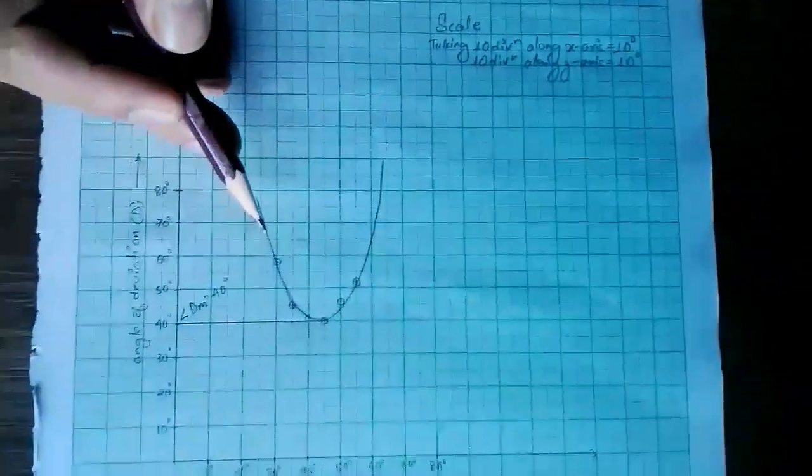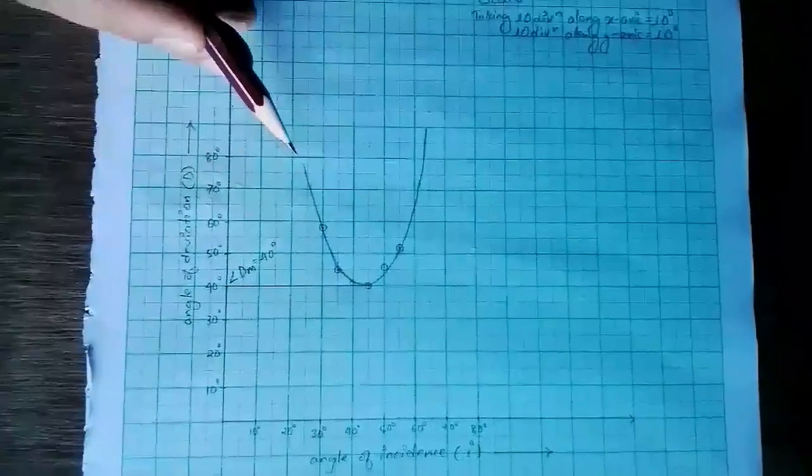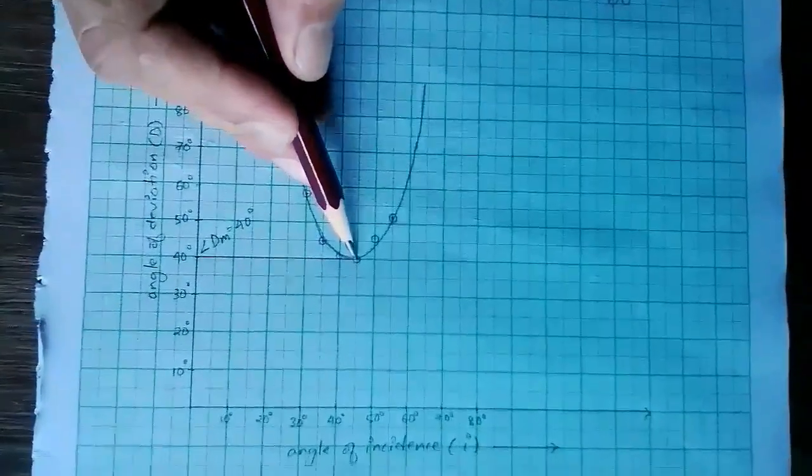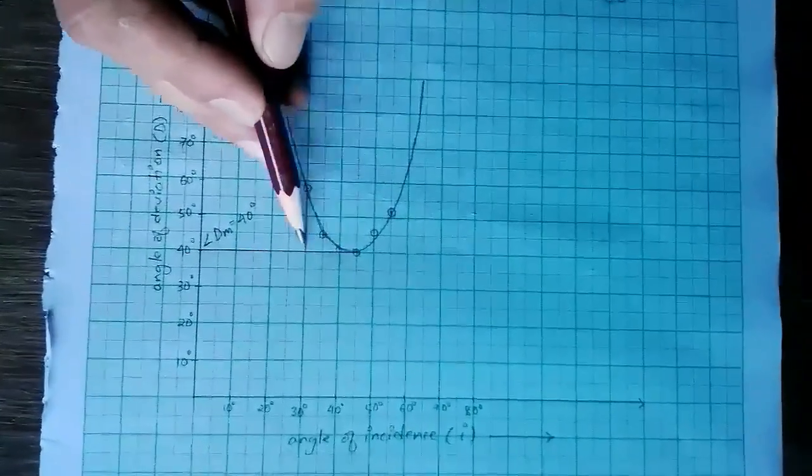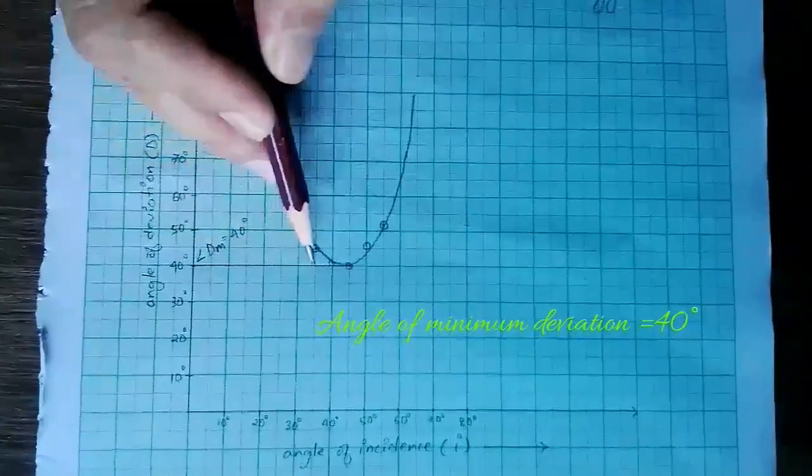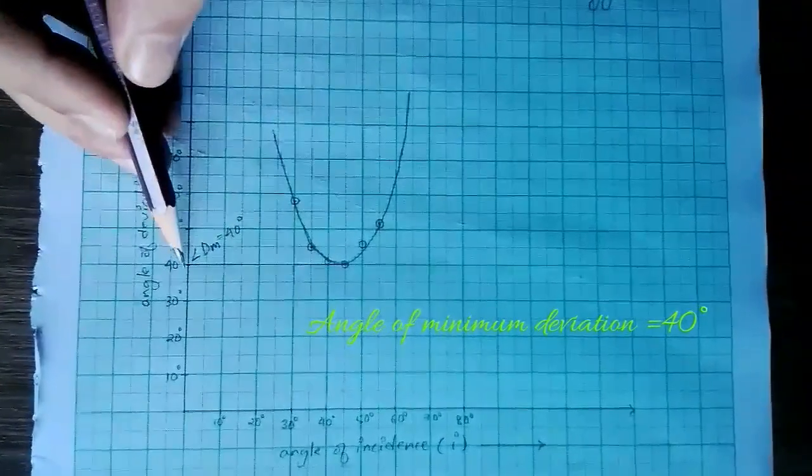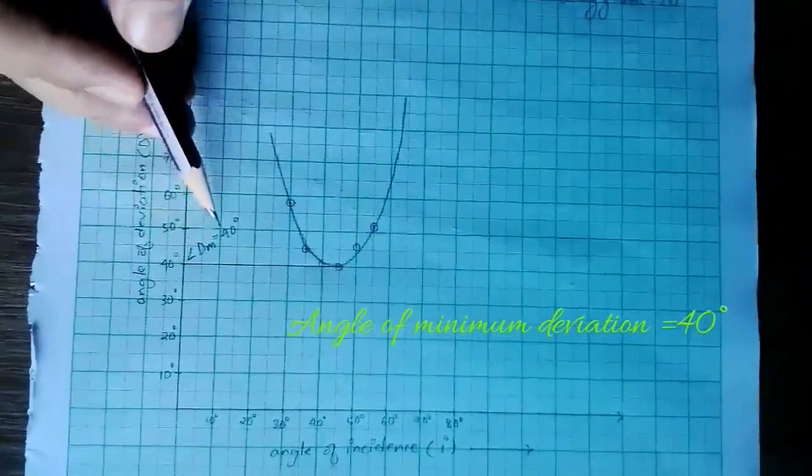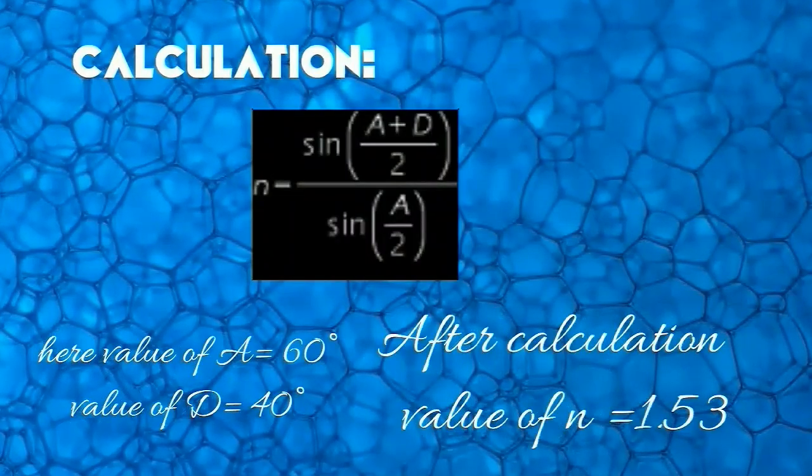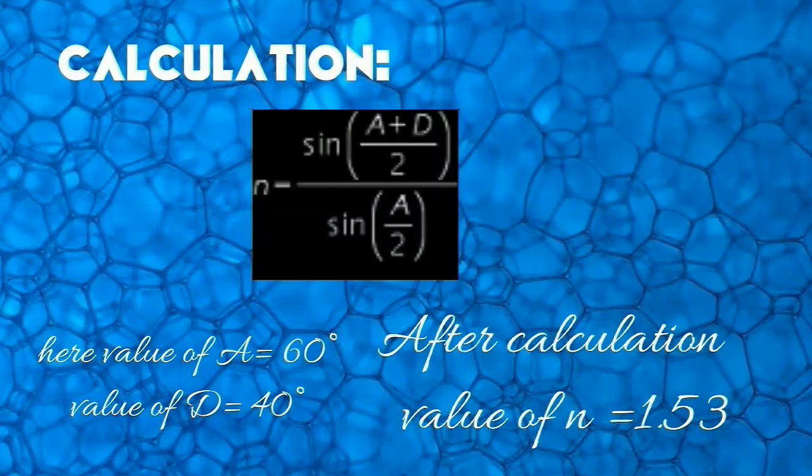Plot the values on the graph, and the graph forms a parabola. As you can see, we find the minimum value where a straight line from the y-axis shows the angle of minimum deviation is 40 degrees. We use this value in the formula.